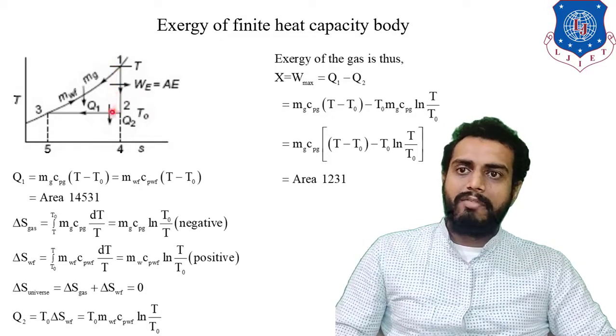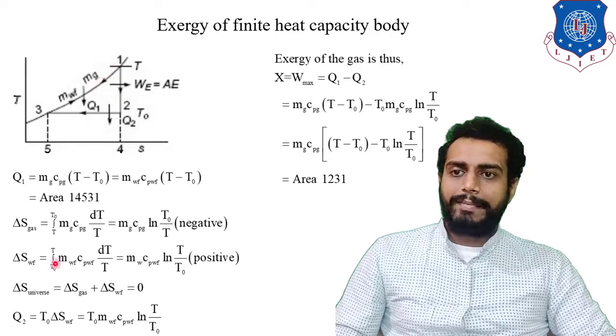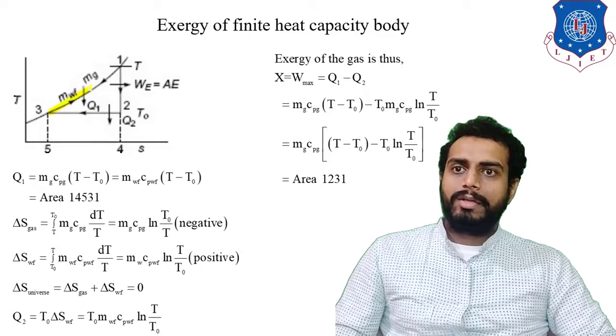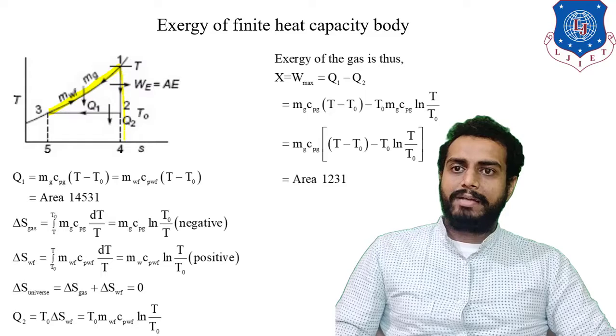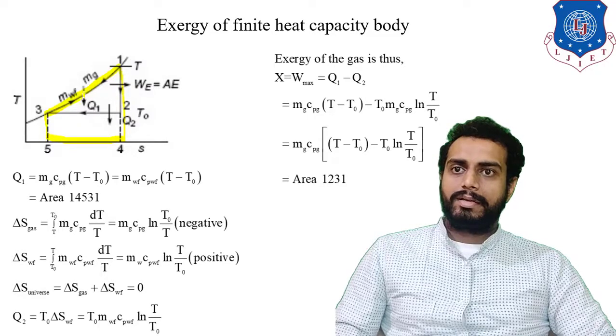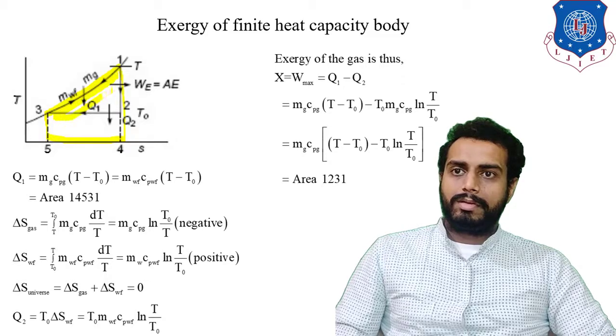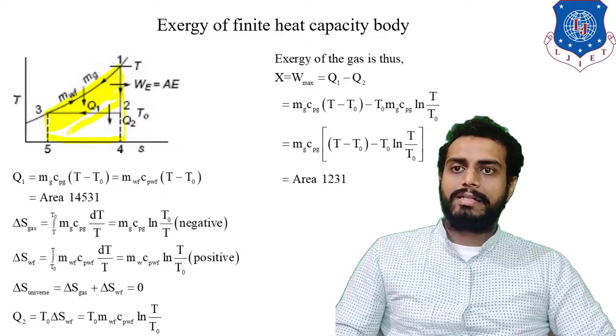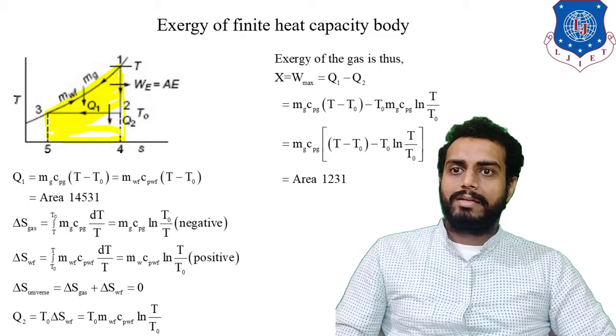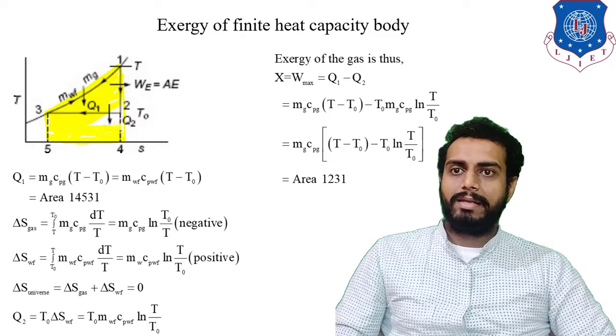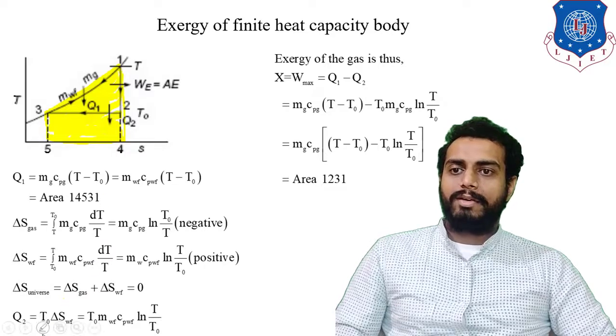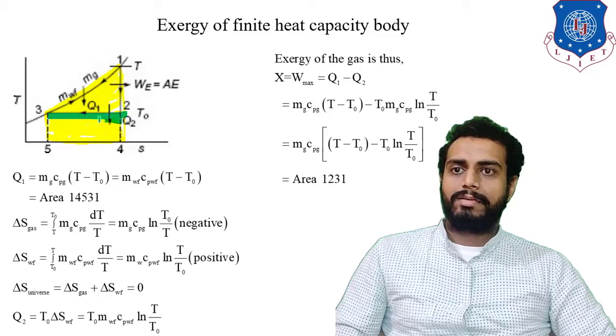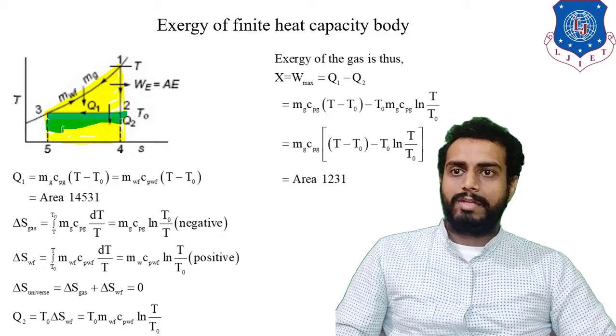Because you know that this whole yellow highlighted area, this whole yellow highlighted area will give us the total heat that is transferred in this cycle. This will give us total heat that is transferred in this cycle. Now from that, let us subtract the heat rejected. So heat rejected can be subtracted. So this will be the heat rejected.